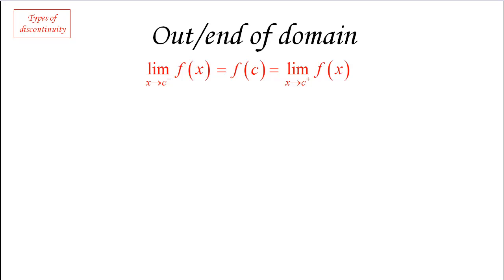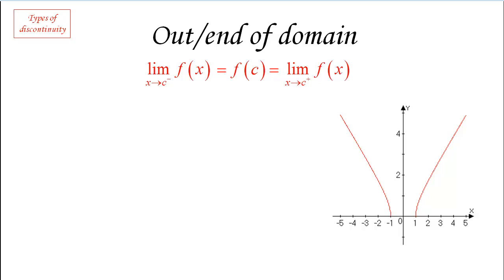The first case is an extreme case but fairly common — the out-of-domain or end-of-domain situation, which happens when the discontinuity is related to the domain of the function. For example, the function square root of x squared minus 1 has a domain that does not contain numbers between negative 1 and 1, because that would require computing the square root of a negative number. Let's focus on the graph rather than the formula.